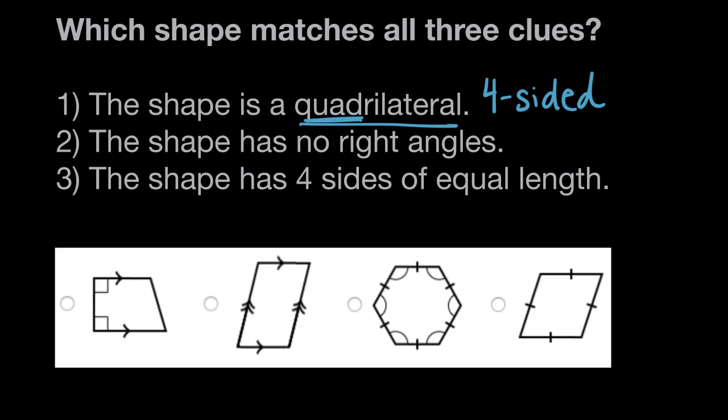So looking down here at our shapes, let's see which ones match that first clue. Shape one has one, two, three, four sides, so it is a quadrilateral. Shape two has one, two, three, four sides, so also a quadrilateral.